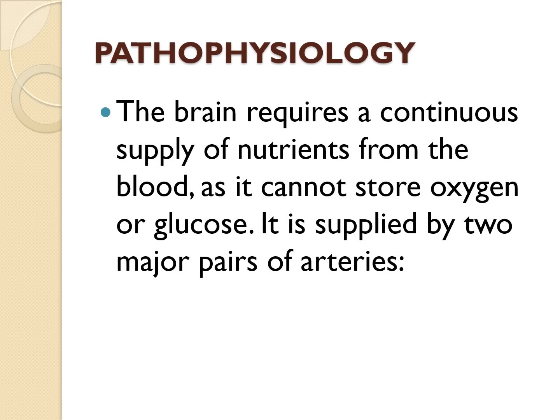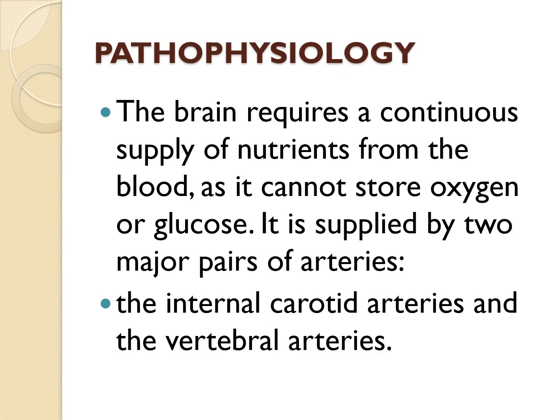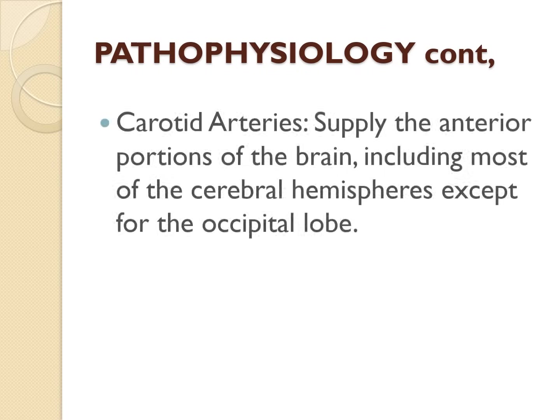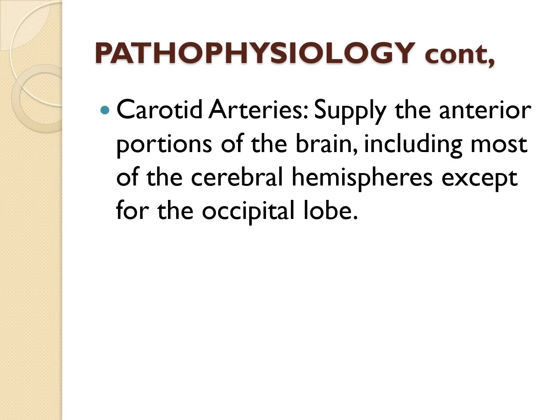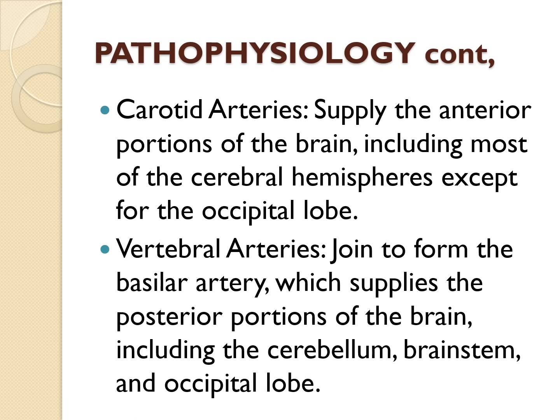Let's now discuss the pathophysiology of stroke. The brain must receive a steady supply of nutrients from the blood because it has no capacity to store either oxygen or glucose. It is supplied with blood from two major pairs of arteries — the internal carotid and the vertebrals. The carotid supplies the anterior portions of the brain including most of the cerebral hemispheres except the occipital lobe. The vertebrals join together to become the basilar artery and supply the posterior portions of the brain including the cerebellum, brain stem, and the occipital lobe.